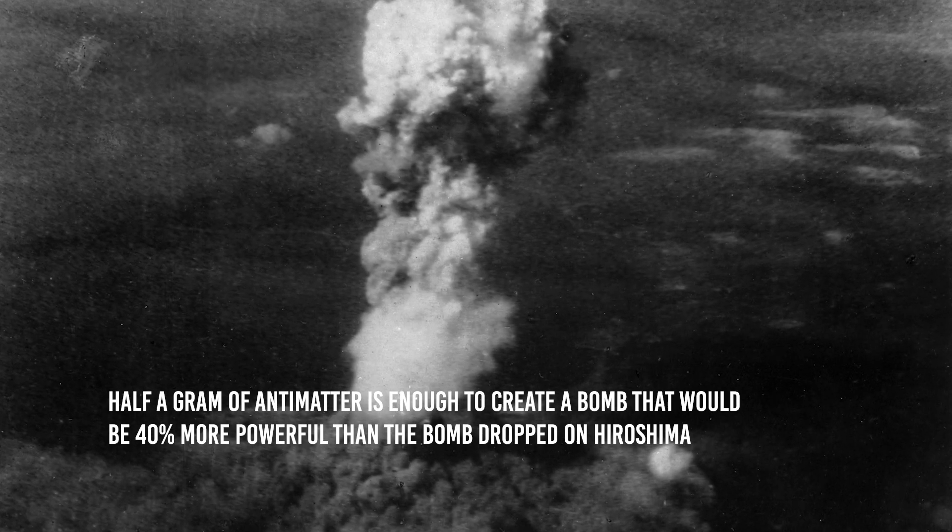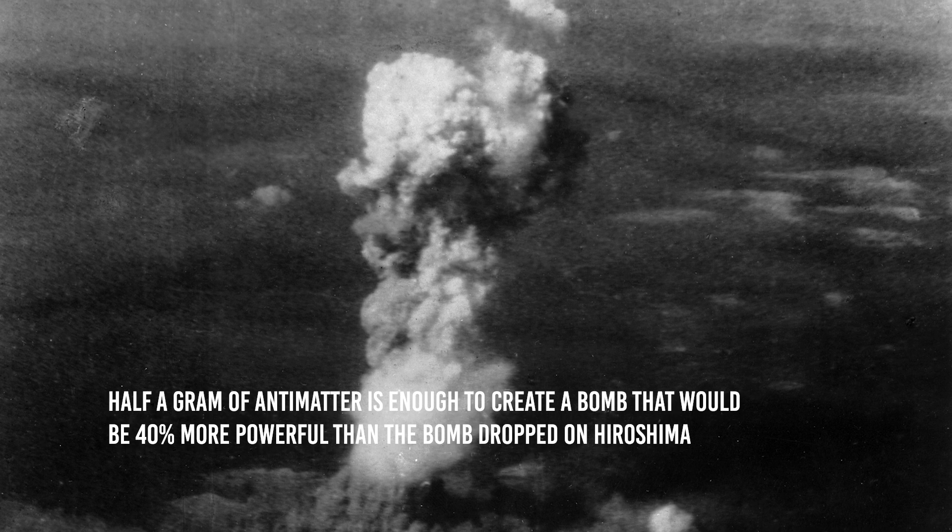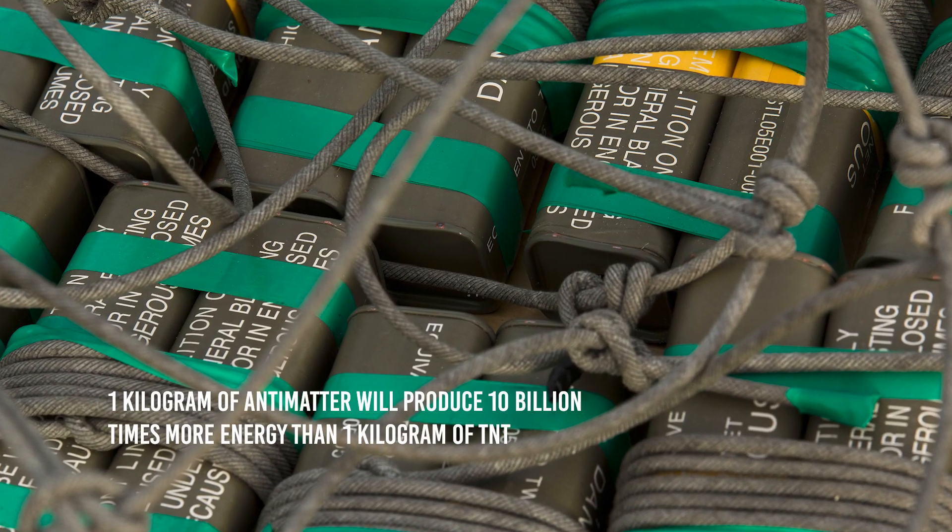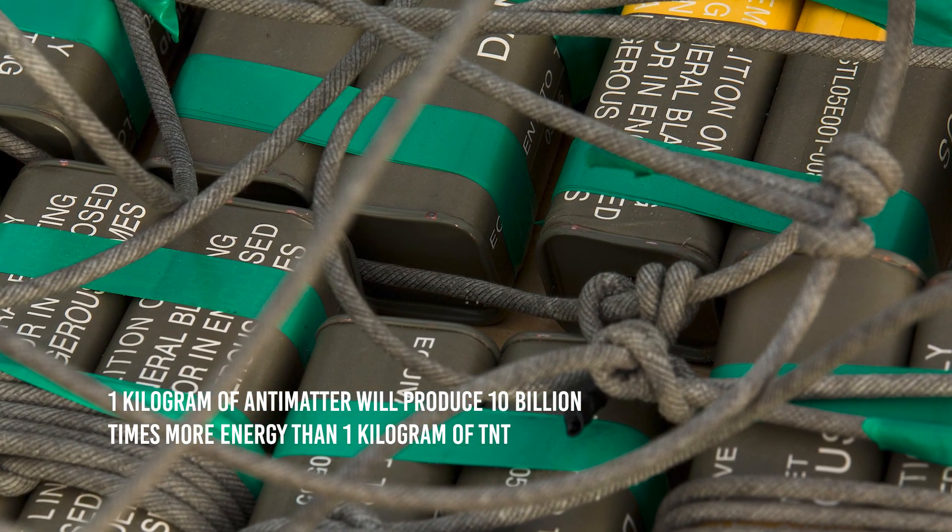Only half a gram of anti-matter is enough to create a bomb that would be 40% more powerful than the bomb dropped on Hiroshima. The annihilation of 1 kg of anti-matter will produce 10 billion times more energy than 1 kg of TNT.